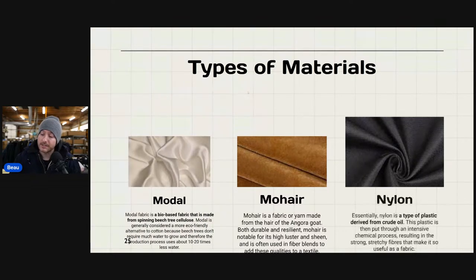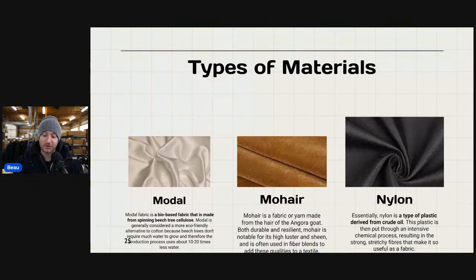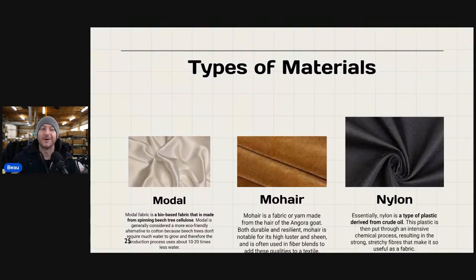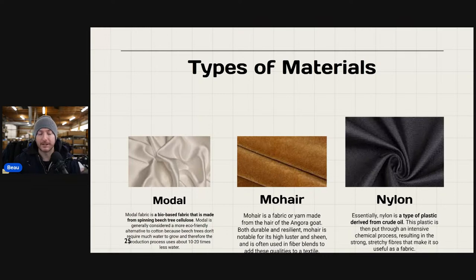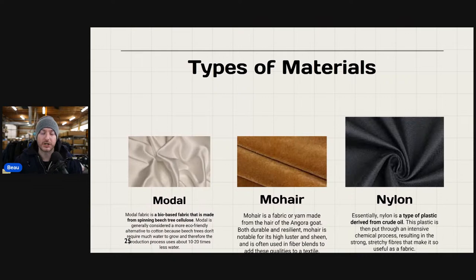Nylon is a type of plastic derived from crude oil, put through an intensive chemical process resulting in a strong, stretchy fiber useful as a fabric. Nylon is something you'd see at Walmart or Target — it's not like wool or cashmere. You're going to see it commonly in sportswear, athleisure, activewear, and soft-shell jackets with a nylon outer shell. Get familiar with nylon — you're just going to see it more in jackets and activewear.